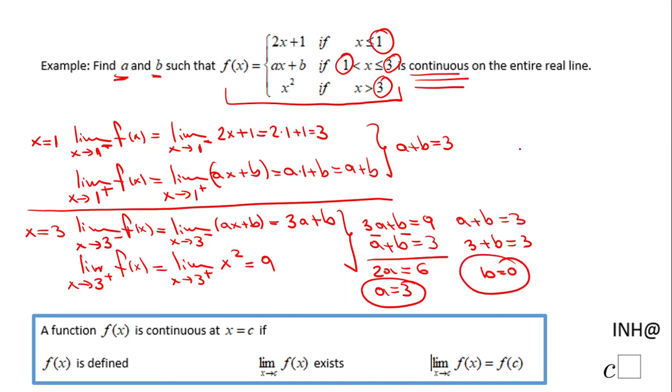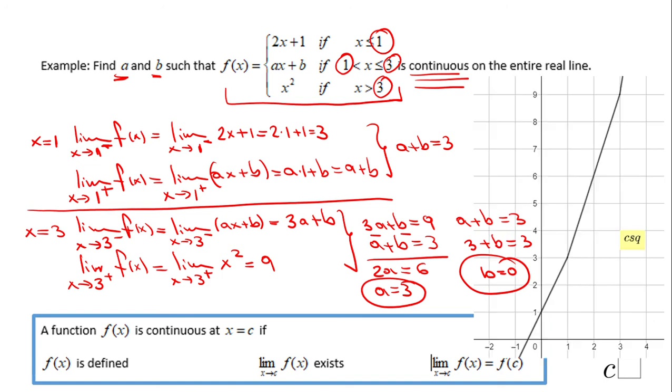So that's it. These are the values of a and b. You can replace them here and use a graphing calculator or any other utility. This is the picture that goes with this piecewise function. If you replace a with 3 and b with 0, you see this function is continuous on the entire real line. If you enjoyed this, don't forget to click the like button and come back to C Squared for more help.